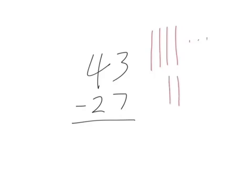We have two tens and we have 1, 2, 3, 4, 5, 6, 7 ones. So we're subtracting 43 minus 27.